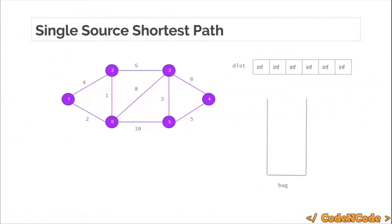To solve this, we need many things. First, we would need an array to store the distance of each node from the source node. We also need a data structure — I'm naming it a bag — which supports three operations efficiently: insertion of an element into it, deletion of an element from it, and finding the minimum element in it.